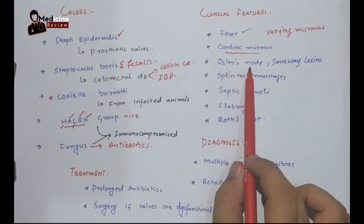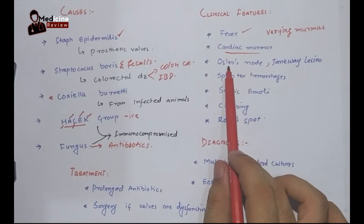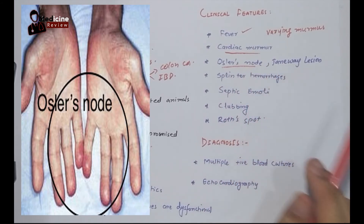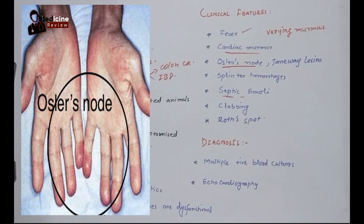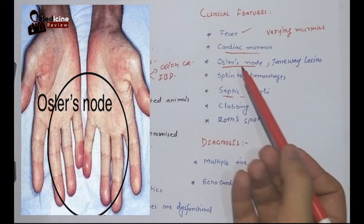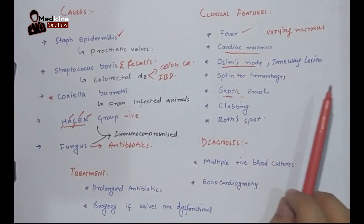There are Osler nodes and Janeway lesions. Osler nodes are painful lesions on the tips of the fingers and toes caused by septic emboli. As discussed in the pathogenesis, the infected vegetations containing bacteria detach as emboli, travel to the fingertips, and cause painful lesions — these are called Osler nodes.